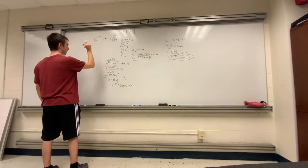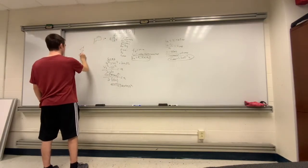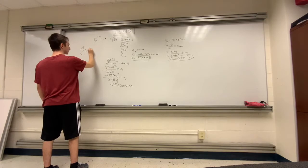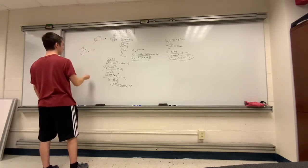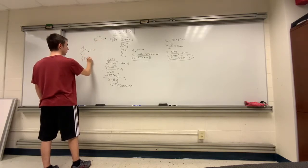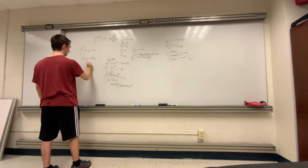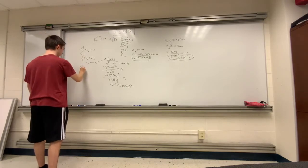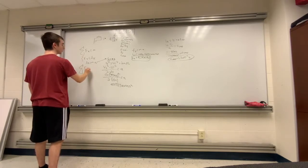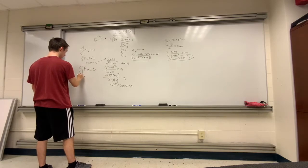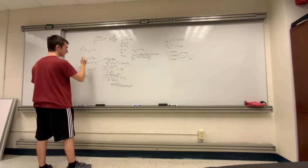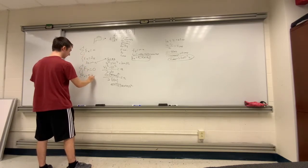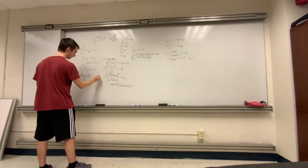To analyze the forces in this problem, the sum of the forces in the x-direction is equal to mass times acceleration. The sum of the forces in the x-direction is just the force of kinetic friction, so the force of kinetic friction equals mass times acceleration. The sum of the forces in the y-direction equals zero, because the normal force minus the force of gravity are always equal.